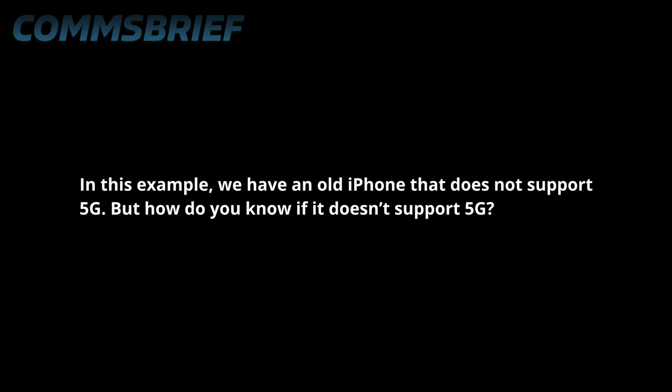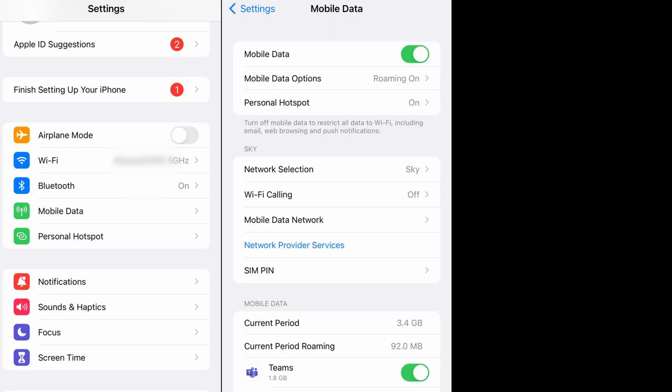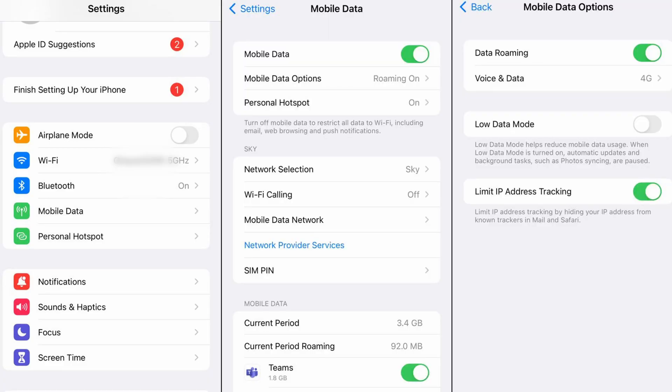In this example we have an old iPhone that does not support 5G. For iPhones, generally you go to Settings, Mobile Data, Mobile Data Options, and then Voice and Data, which takes you to the page showing 5G or 4G. Note that depending on your iPhone, it may use the word 'Cellular' instead of 'Mobile Data', so the path would be Settings, Cellular, Cellular Data Options, Voice and Data. On this iPhone we can see it only supports 3G and 4G but not 5G.